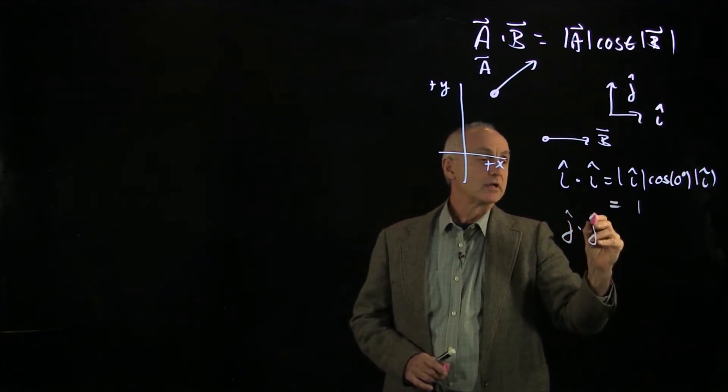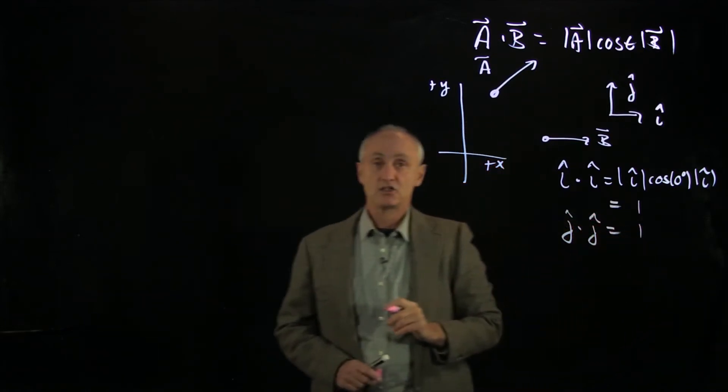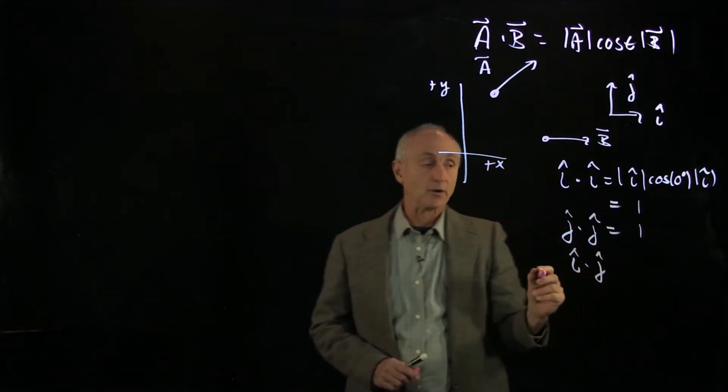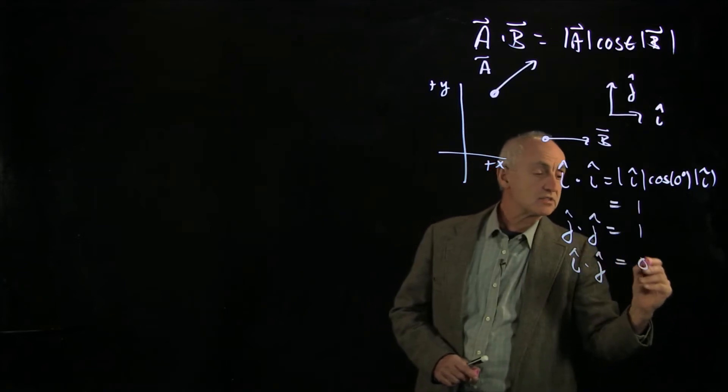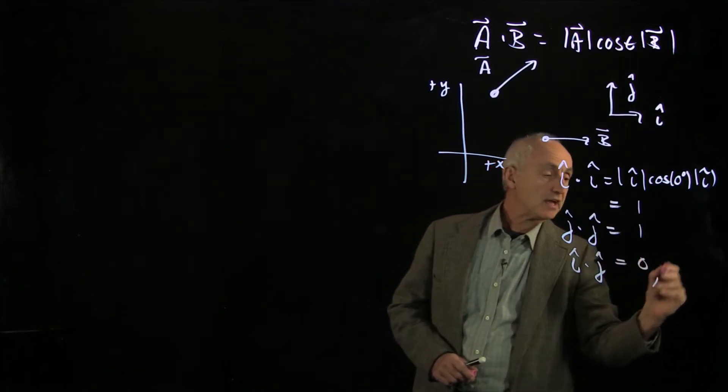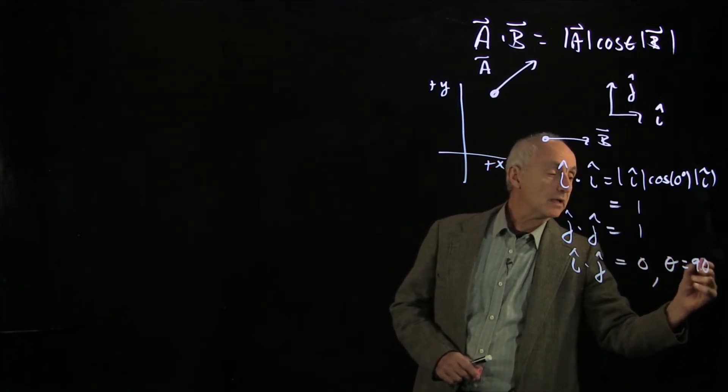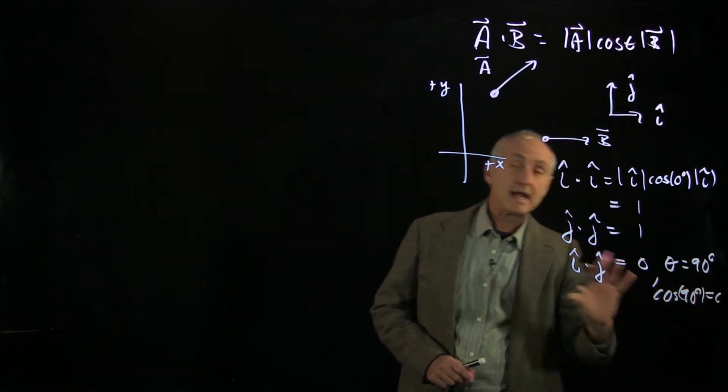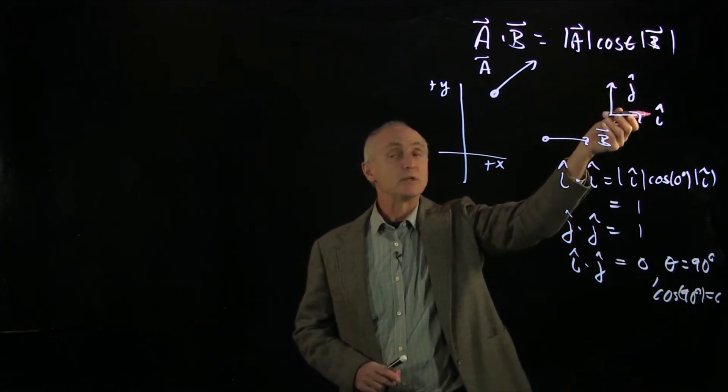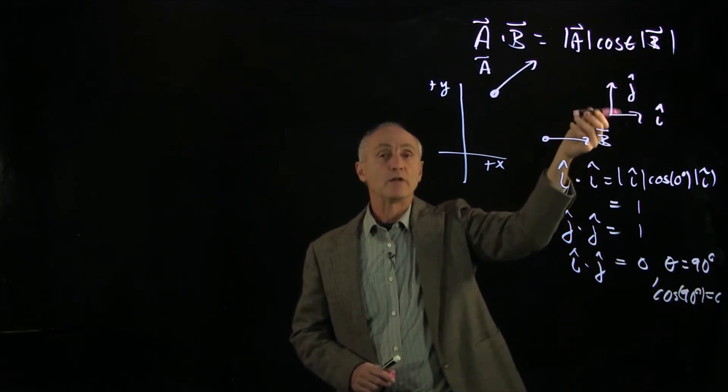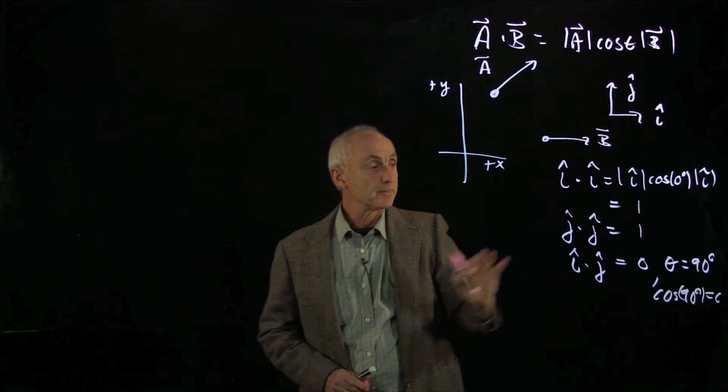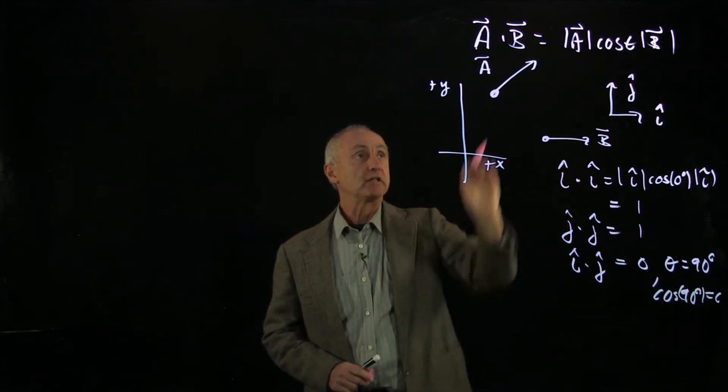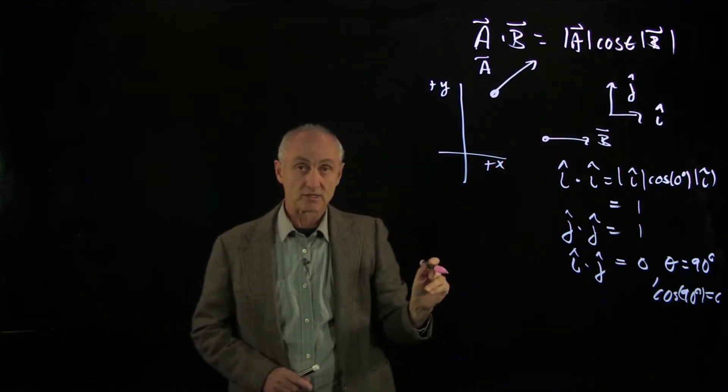And therefore, it's also true for the j hat. j hat dot j hat is 1. And what happens when you dot product two vectors that are perpendicular? In this case, this is 0 because the angle theta is 90 degrees. And remember that cosine of 90 degrees is 0. When two vectors are perpendicular, there's no component of one vector that's parallel to the other. So these are the essential facts that we're going to need to calculate the dot product of two vectors that are separated in space.